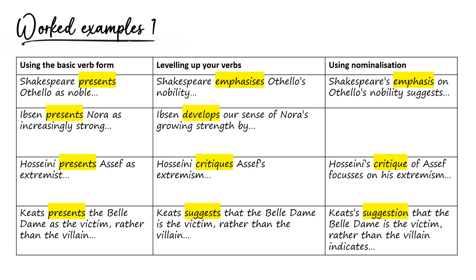Let's look at some examples on screen. First row: 'Shakespeare presents Othello as noble.' The word 'presents' is quite assertive, so I need to think about whether I want an assertive verb or whether 'suggests' would be more appropriate. Thinking through my evidence, I'm sure that Shakespeare is presenting Othello as noble at the start, so I'll keep an assertive verb. I might even go stronger and say 'emphasises' — so 'Shakespeare emphasises Othello's nobility.' Using nominalisation, that becomes 'Shakespeare's emphasis on Othello's nobility suggests...'